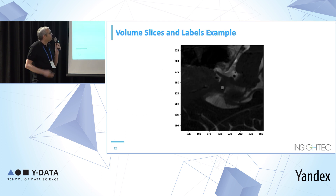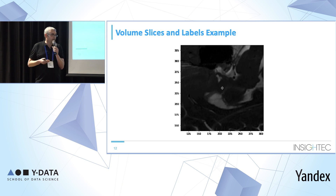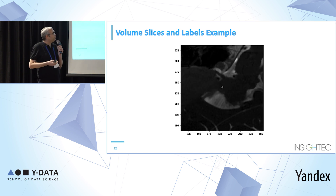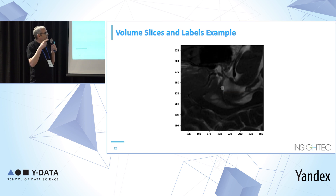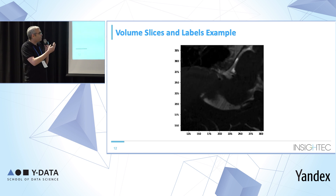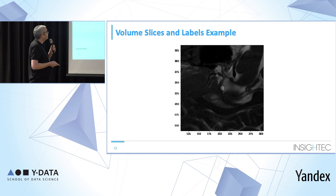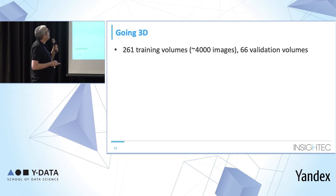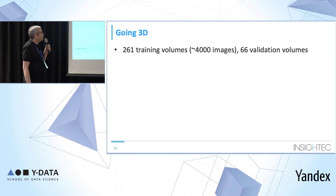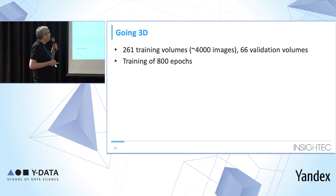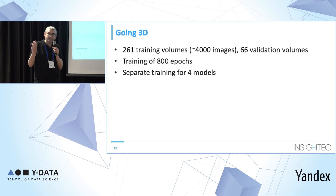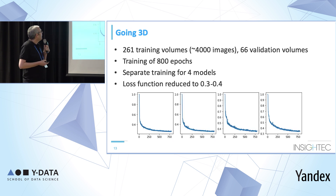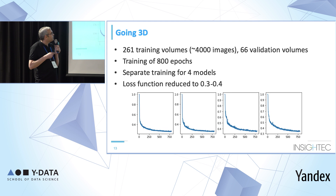The label on the slice where the landmark exists is large, and as we get farther from it, the label becomes smaller until it disappears. I trained on about 260 volumes from previous treatments, with several slices each. I trained for 800 epochs and trained four models: for AC and PC, in sagittal and axial orientations. The loss function reduced to a quite stable level of 0.3 to 0.4.